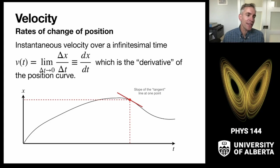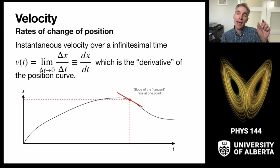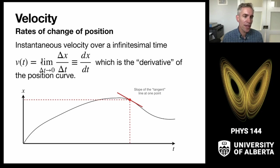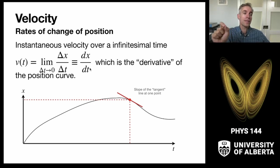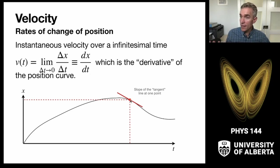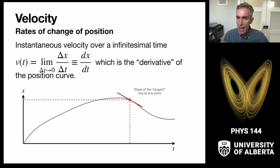We think about this using the limit operator. As the time interval gets smaller and smaller, we get a better and better approximation of what we call the instantaneous velocity. Instead of writing the limit of delta-x over delta-t, we use the notation dx/dt — a tiny change in distance divided by a tiny change in time at that point. In the language of calculus, we call this the derivative of the curve at that point.